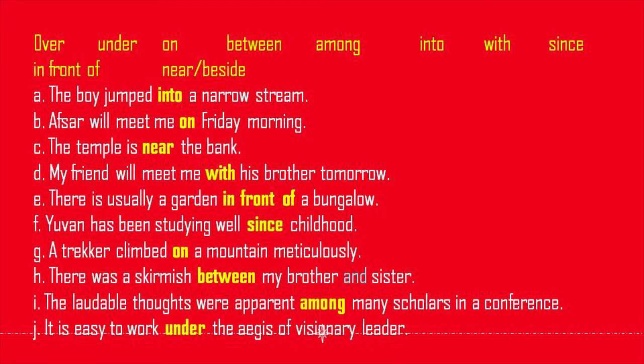Answers for Task 1: The temple is near the bank. My friend will meet me with his brother tomorrow. There is usually a garden in front of a bungalow. One has been studying well since childhood. A trekker climbed on a mountain meticulously. There was a skirmish between my brother and his sister. The lovable thoughts were apparent among many scholars. It is easy to work under the ages of visionary leaders.